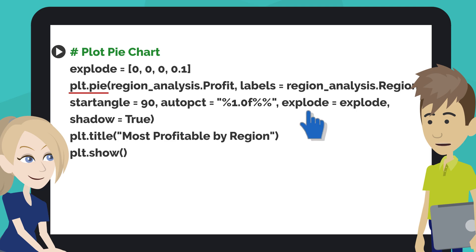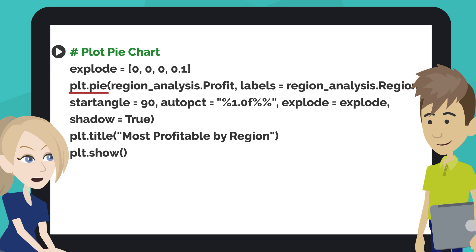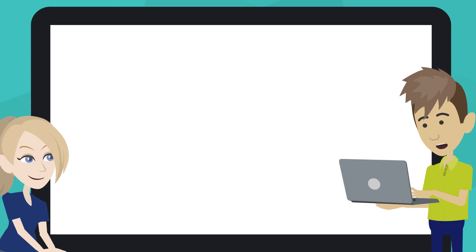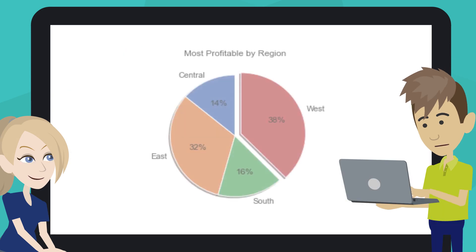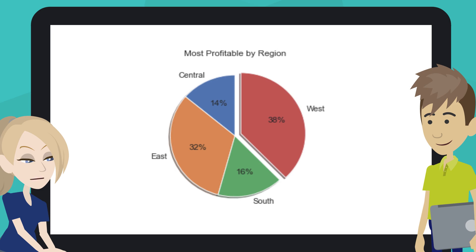The explode parameter stands out one of the wedges. Each value represents how far from the center each wedge is displayed. The shadow parameter adds a shadow to the pie chart. Click on the Play button or hit Shift plus Enter. We can see the pie chart for the profit by region now.